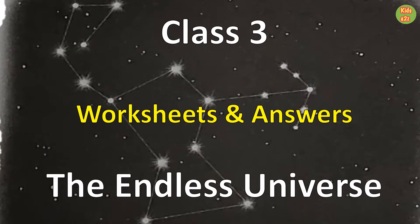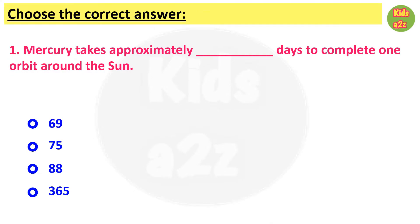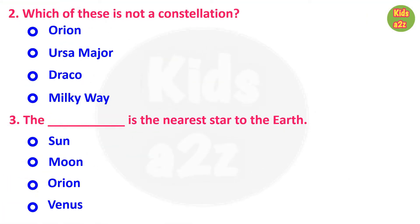Class 3 worksheets on the endless universe with answers. Kids need to choose the correct answer from the given options. First one: Mercury takes approximately 88 days to complete one orbit around the Sun. Question two: which of these is not a constellation? The answer is Milky Way. Question 3: the dash is the nearest star to the Earth.